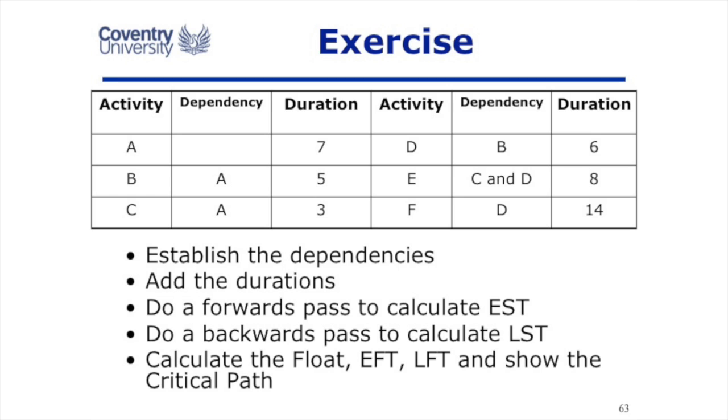Then add the durations. Do the forwards pass to calculate the earliest starting time. You cannot do the latest starting time. You cannot do the backwards pass until you've gone forwards doing the early starting time. Come backwards, do the latest starting time, then calculate the float and the early finish and the late finish, and then show the critical path.